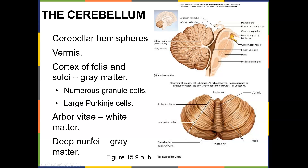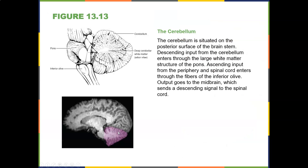Inside the cerebellum you have what's called the arbor vitae — in Latin, arbor means tree and vitae means life, so it's the 'tree of life.' That's white matter, and the deep nuclei are gray matter. The cerebellum is situated on the posterior surface of the brain stem.